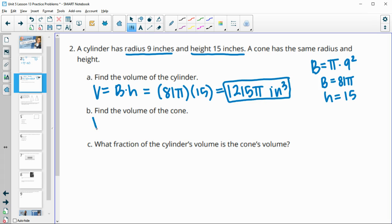So now for a cone, a cone is just going to be area of the base times the height divided by three. Well, we've already found the area of the base times the height. That's the volume of the cylinder. So all we have left to do is just divide this by three. And that will be the volume of our cone, which is 405π inches cubed.